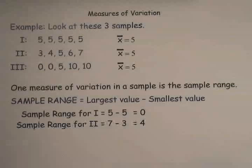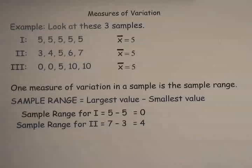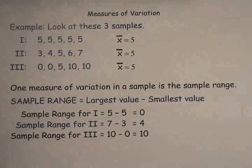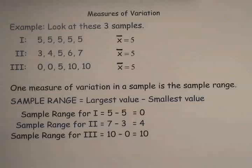Looking at data set two, the largest number is seven while the smallest is three, so the sample range for that set is four — in other words, they're more spread out. And finally, the sample range for the third data set is ten, which is the largest number minus zero, the smallest, so the sample range is ten. That corresponds to your common sense about how spread out those numbers are.